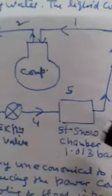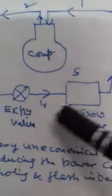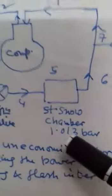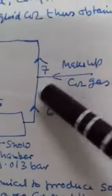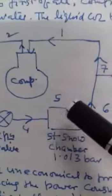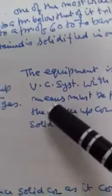This is the process through which the manufacturing of solid CO2 takes place. The equipment is similar to that of a vapor compression system, with an exception that means must be provided for supplying the makeup CO2 gas and for the removal of solid CO2.